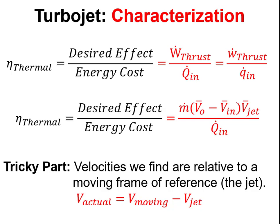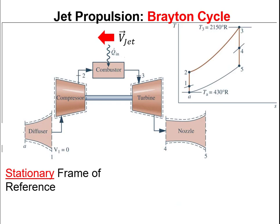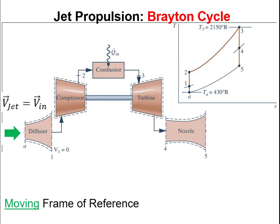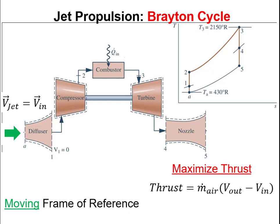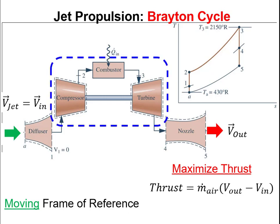One tricky thing in turbojet problems is that velocities are relative to the moving frame of reference. We think of ourselves as sitting on top of the wing as the plane flies through the air — it's the air that's flying into our faces. The jet velocity is going to be the inlet velocity, assuming still air. We want to maximize thrust, so we want the velocity coming out of the nozzle at the end of the turbojet as high as possible.